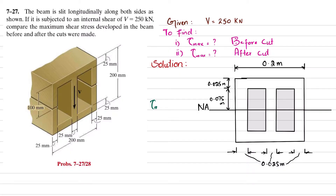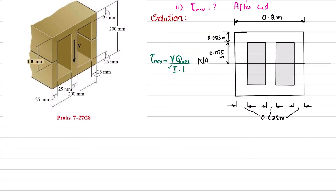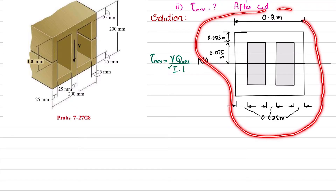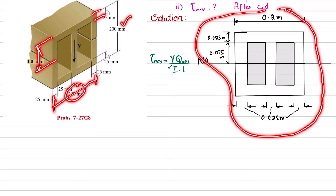The maximum shearing stress formula is τ_max = V·Q_max / (I·t). We will first find I, the section property for this beam. The cross section dimensions in meters are: flange width 0.2 m, thickness 0.025 m, half-height 0.1 m, and total width 0.2 m.